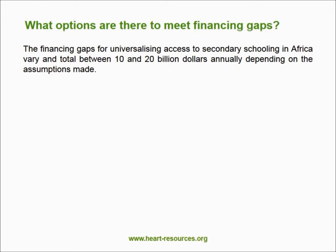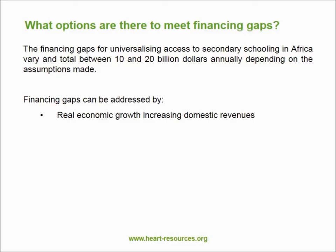When we model the financing gaps to universalise secondary schooling across Africa, the numbers we come up with are typically between 10 and 20 billion dollars annually on the recurrent side. These financing gaps can be addressed — any country that spends more than 5% or 6% of GDP on its education system with an appropriate cost structure can find ways to universalise access through to the end of the lower secondary cycle, and in some cases through to upper secondary. Real economic growth of course increases domestic revenue.